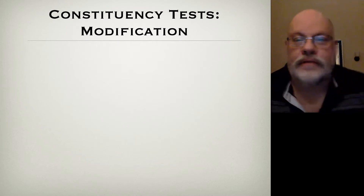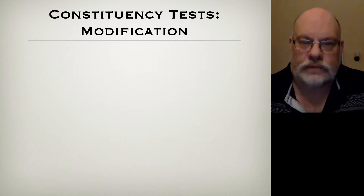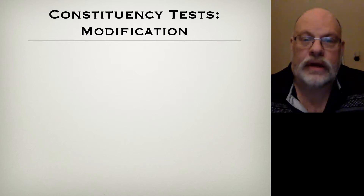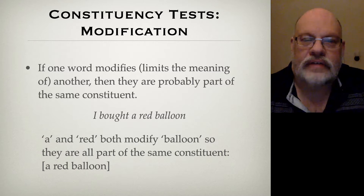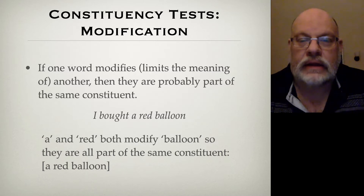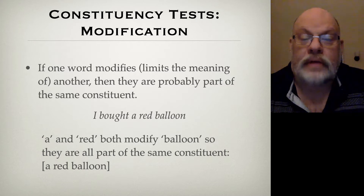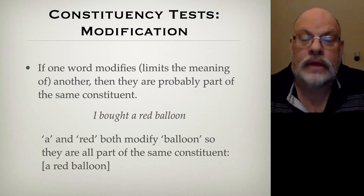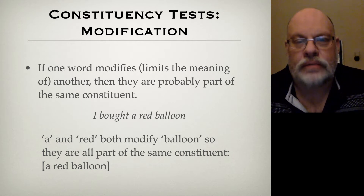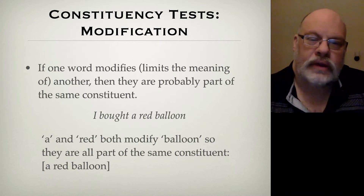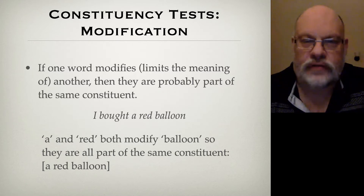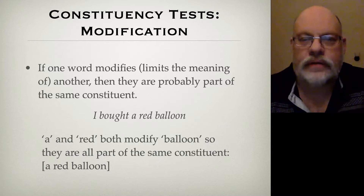We have a number of tests we can use to identify whether something is a constituent or not. The first of these is the modification test, which draws upon the insight that semantically related material sits together as a constituent. The modification test says that if one word modifies — meaning limits the meaning of another — then they're probably part of the same constituent. For example, I bought a red balloon. A and red both modify balloon; they tell you what kind of balloon and that there was one of them. So they're all part of the same constituent: a red balloon.